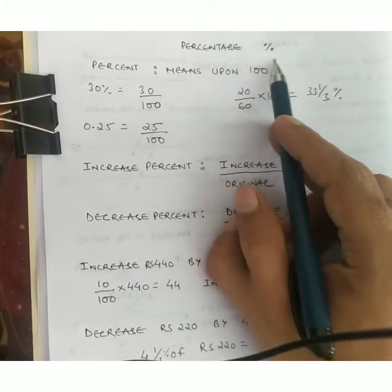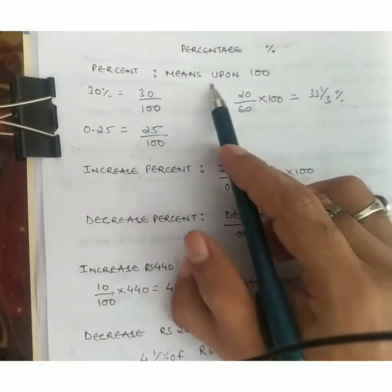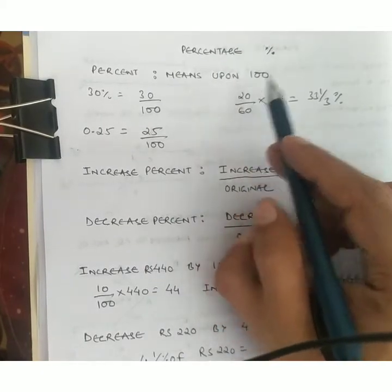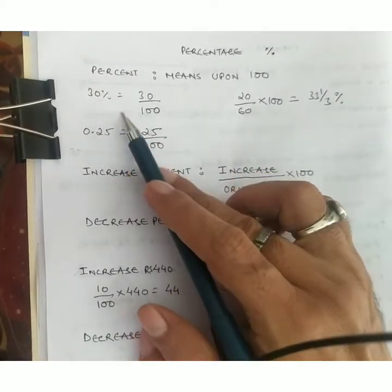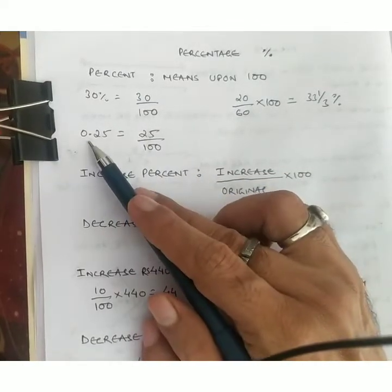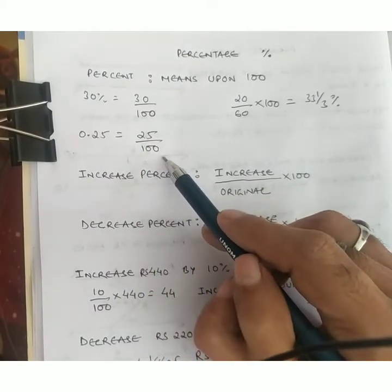Percentage is expressed by the % symbol and percentage means upon 100. Anything upon 100 is known as percentage. For example, 30% equals 30 upon 100. The decimal 0.25 equals 25 upon 100.